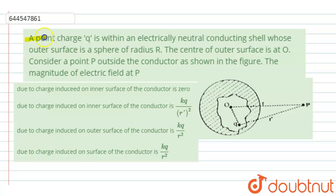The given question is: a point charge Q is within an electrically neutral conducting shell whose outer surface is a sphere of radius R. The center of the outer surface is at O. Consider a point P outside the conductor as shown in the figure. The magnitude of electric field at P will be given as,